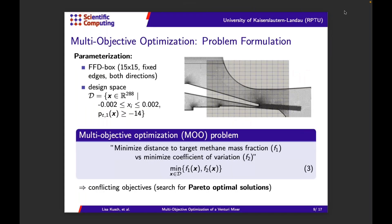For the multi-objective optimization setup, we parametrize the shape of the mixer in the inlet area and also a bit in the mixing area using a corresponding FFD box. We can vary the control points of the FFD box in both directions, leading to 288 design variables. The design space is composed by constraining the design variables and also constraining with respect to the total pressure. The multi-objective optimization problem then minimizes F1 — the distance to a target methane mass fraction — and F2 — the coefficient of variation — over this design space.